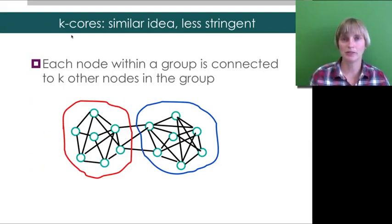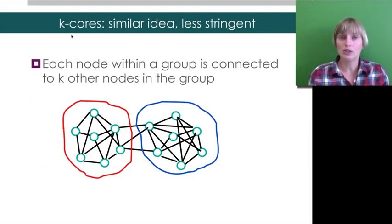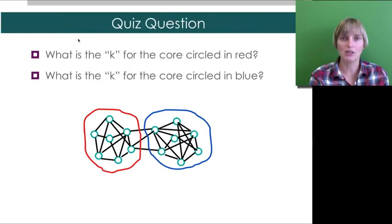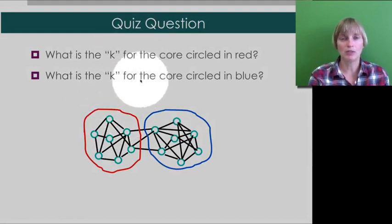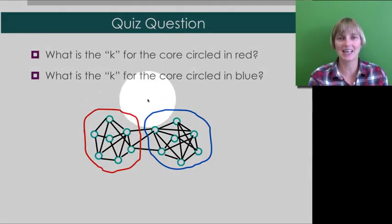So, let's be a little bit less stringent. K-cores say that unlike cliques, you don't need to know everyone in your K-core. You just need to know K of them. So, looking at this network then. Can you tell me what is the K for the core circled in red? Or, depending on your quiz question, what is the K for the core circled in blue?